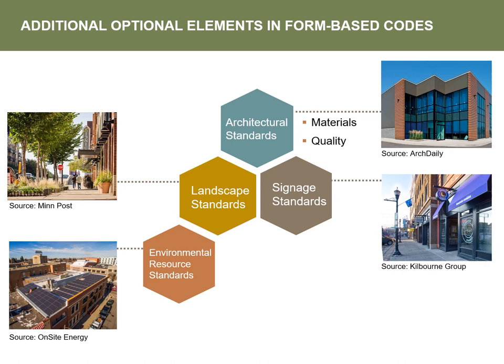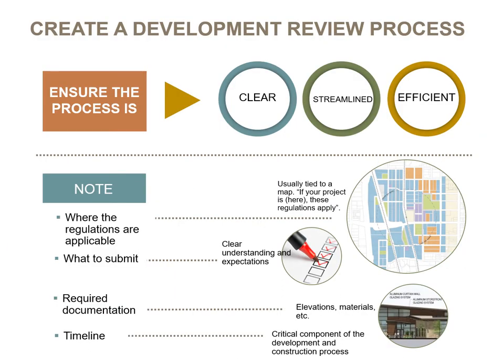Additional optional elements in form-based code: form-based codes do not typically address architectural standards like materials quality and architectural style, but they are optional. Landscape standards for the streetscape are typically included, while it is less common to include streetscape requirements for private land other than for the area between the facade and the street. Signage standards and environmental resource standards are also optional. The review process should be clear, streamlined, and efficient — persons looking for project approval need to know what standards are applicable to their property, where to obtain an application, what is needed for a complete application, and a projected timeline for obtaining approval.